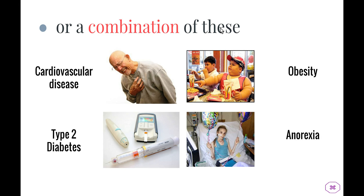We can also have a combination of these types. For example, cardiovascular disease can be both a lifestyle disease and a nutritional disease — if you lead a very sedentary life without much physical exercise and also eat a lot of fatty food, you run the risk of cardiovascular disease. This also applies to obesity and type 2 diabetes, where poor lifestyle choices, insufficient exercise, and food high in sugar can lead to late onset diabetes. Anorexia is a lifestyle disease that also ties in with nutritional diseases.